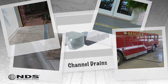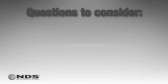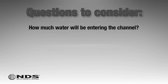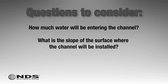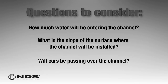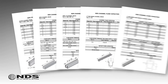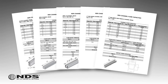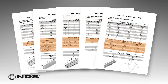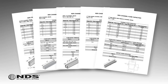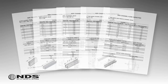When selecting a channel drain, the following things must be considered: How much water will be entering the channel? What is the slope of the surface where the channel will be installed? Will cars be passing over the channel? Flow capacity tables have been created for each channel drain. These tables show the amount of water each channel is able to convey. The flow rates through the grates and outlet flow capacities are also shown for each drain. To determine if a particular channel drain will work for your situation, follow the following steps.